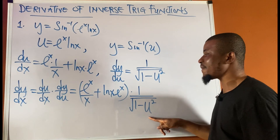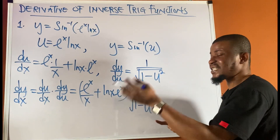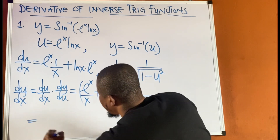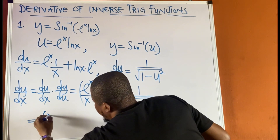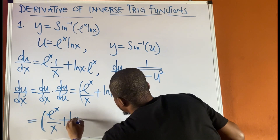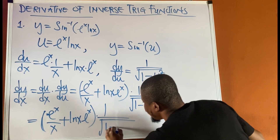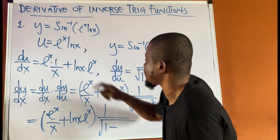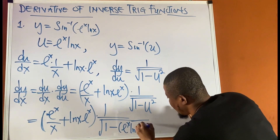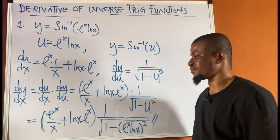For dy/du, since the derivative of sine inverse of x is 1 upon square root of 1 minus x squared, the derivative of sine inverse of u is 1 upon square root of 1 minus u squared. Applying the chain rule, dy/dx equals du/dx times dy/du, which gives (eˣ/x plus eˣ · ln x) times 1 upon square root of 1 minus (eˣ · ln x) squared.